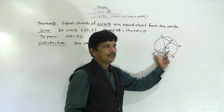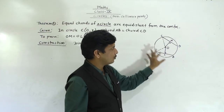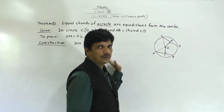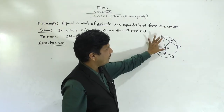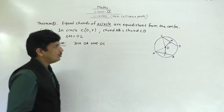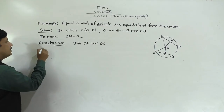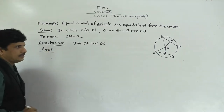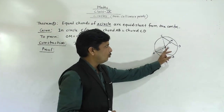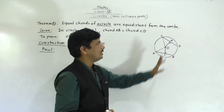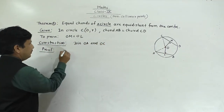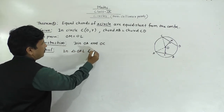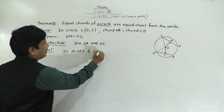Since OL bisects AB, AL equals half of AB. Since OM bisects CD, CM equals half of CD. Since AB equals CD (given), half of AB equals half of CD, so AL equals CM. That gives us our third equal pair in the two triangles.